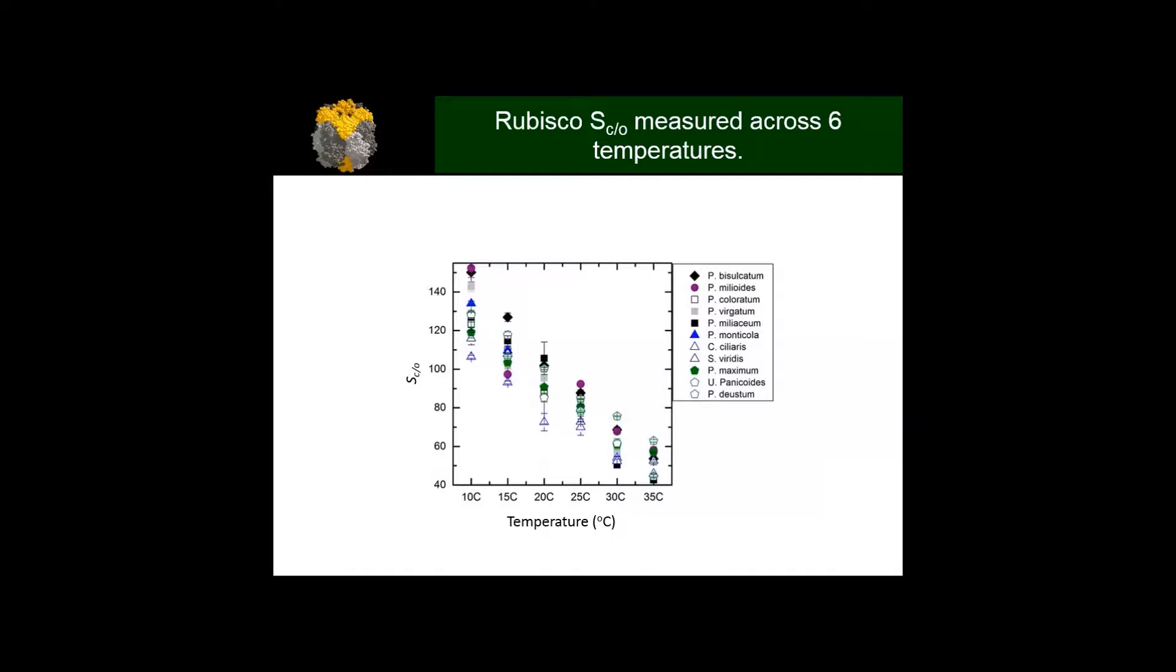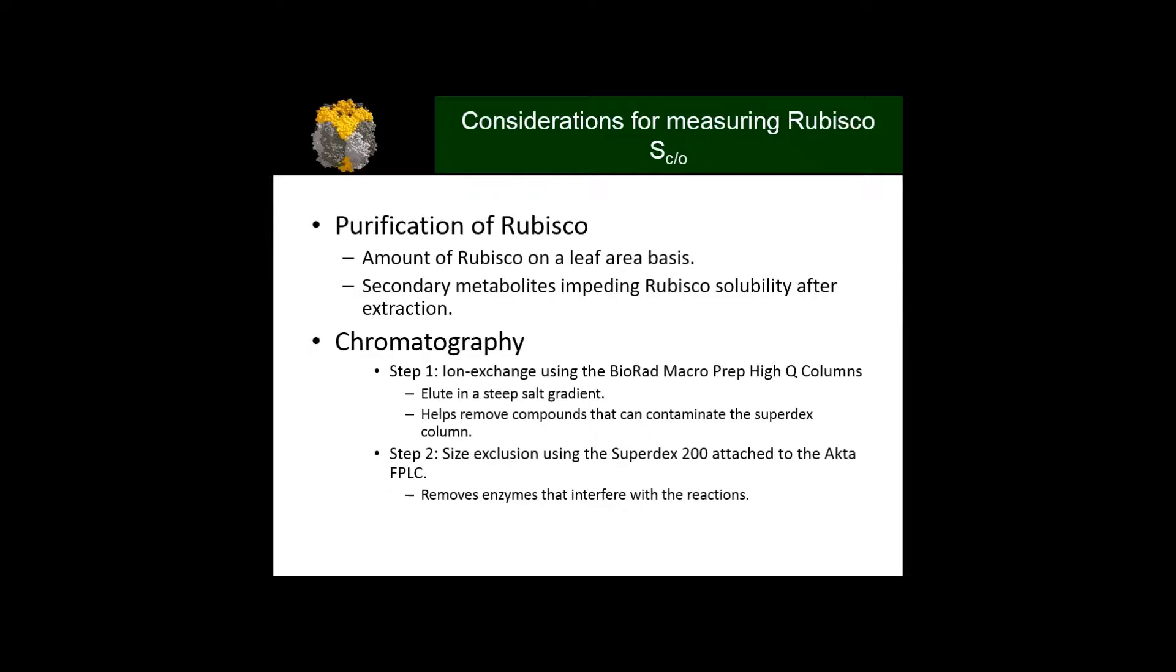We can also measure specificity across different temperatures. This shows data we've collected for C4 grasses where we've measured specificity at six different temperatures. This enables us to get the temperature dependency for each of these enzymes, and it varies quite substantially, which is why we're interested in measuring Rubisco specificity.